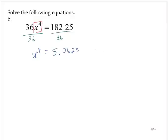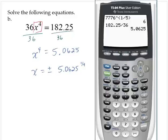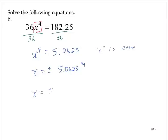Notice that the n is even in this case, right? We have an x to the fourth power. Four is even. So then x would be positive or negative 5.0625 to the 1 fourth power. On the calculator, we take 5.0625, raise that to the quantity, 1 divided by 4, close quantity, Enter. And that's 1.5. So therefore, x is equal to positive or negative 1.5.